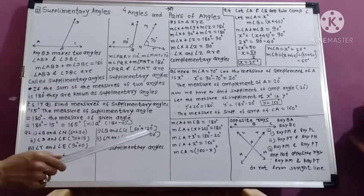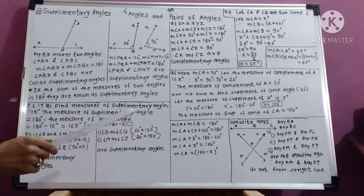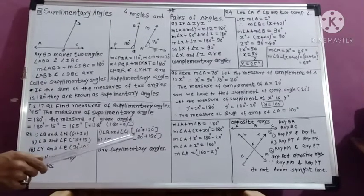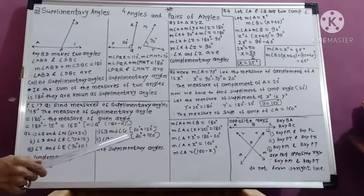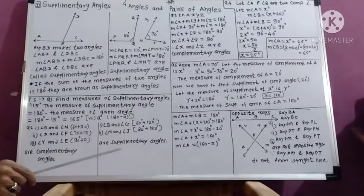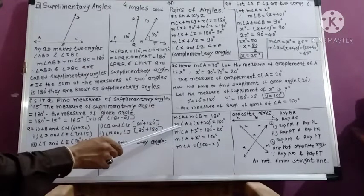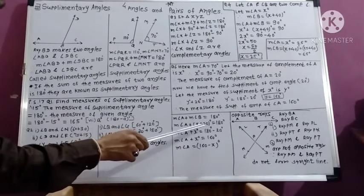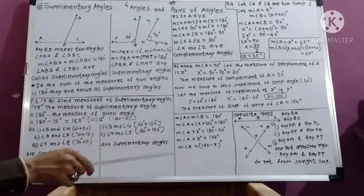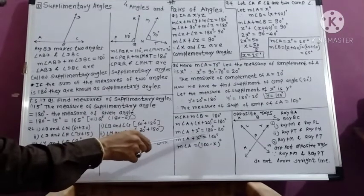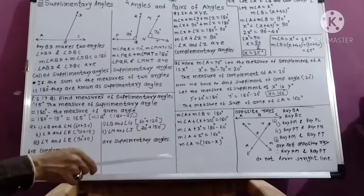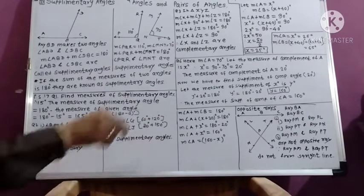Let the measure of the supplement of x degrees be y degrees. By the given condition: y plus 20 degrees equals 180 degrees, so y equals 180 minus 20 equals 160 degrees. Therefore, the measure of the supplement of the complement of A is 160 degrees.